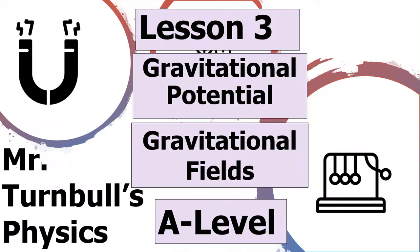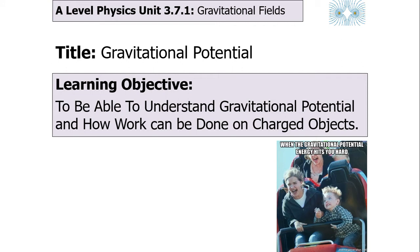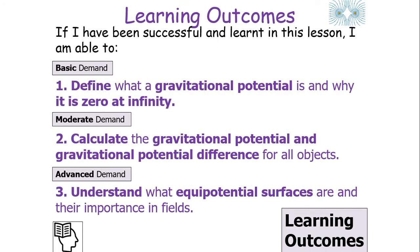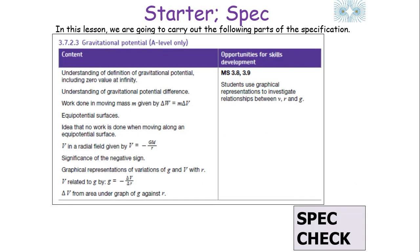Hello and welcome to today's lesson looking at gravitational potential, which forms part of the gravitational fields topic in the AQA A-level physics specification. In today's lesson, we're going to look at gravitational potential, define what it is and why it's zero at infinity, calculate the gravitational potential and gravitational potential difference for all objects, and understand what equipotential surfaces are and their importance in fields.